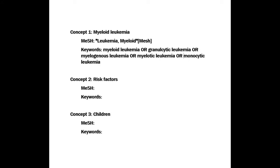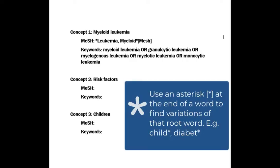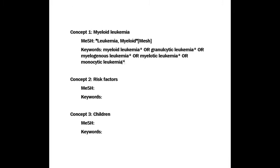Now that I've got my Boolean operators entered, I'm going to look for words that I can truncate. The truncation symbol, an asterisk, allows me to search for all possible variations of a word. Placing an asterisk after the 'a' in leukemia will allow me to search for both the singular and plural versions of the word.